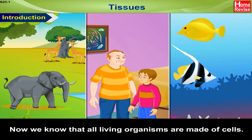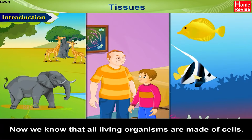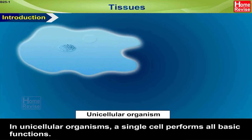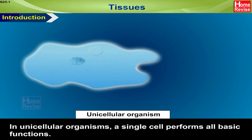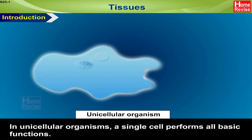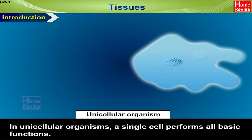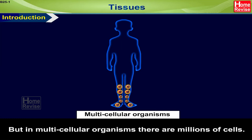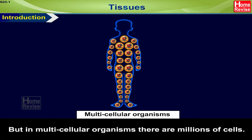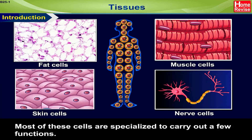Friends, by now we know that all living organisms are made of cells. In unicellular organisms, a single cell performs all basic functions. But in multicellular organisms, there are millions of cells. Most of these cells are specialized to carry out a few functions.